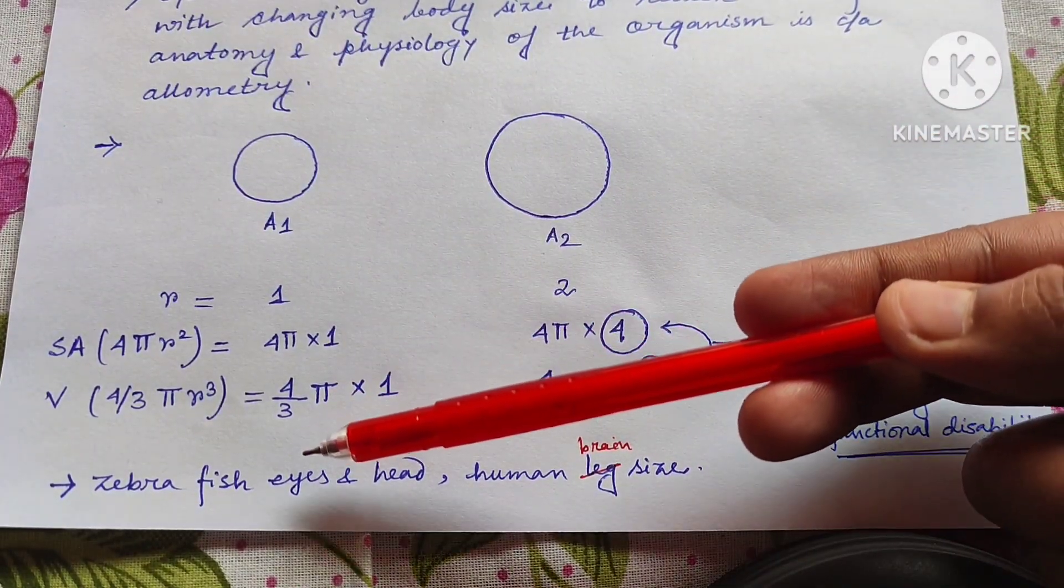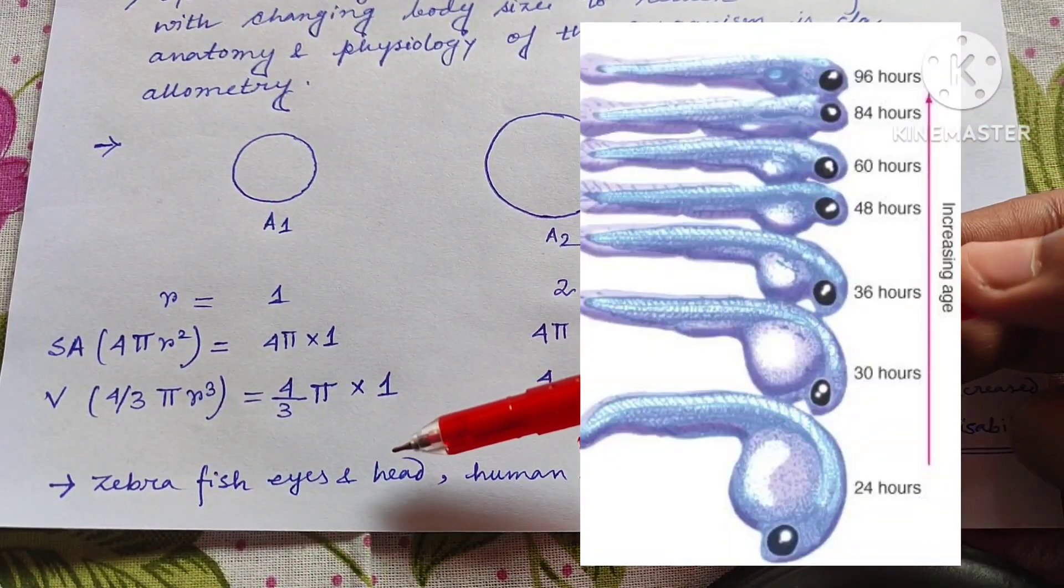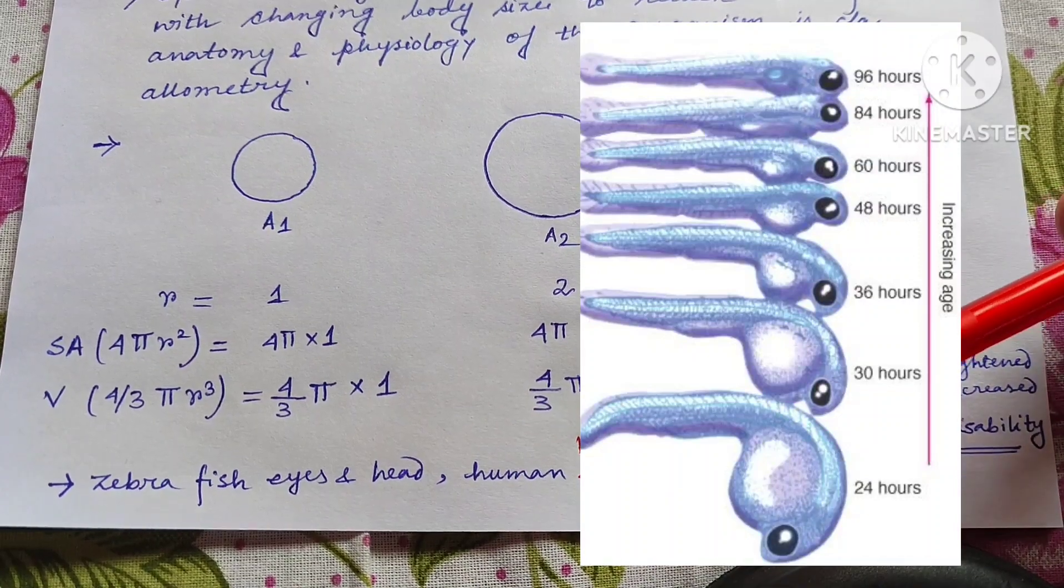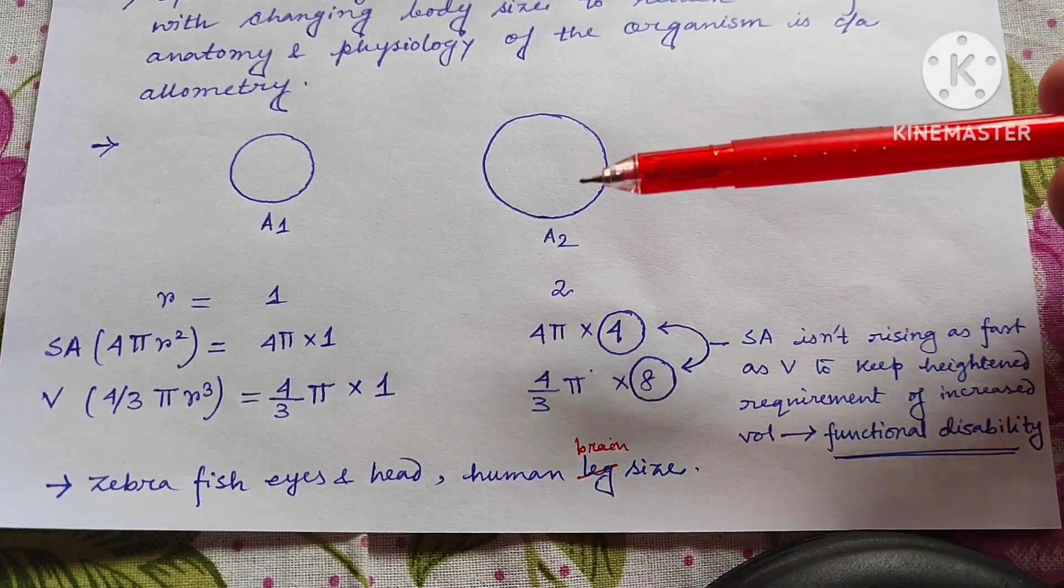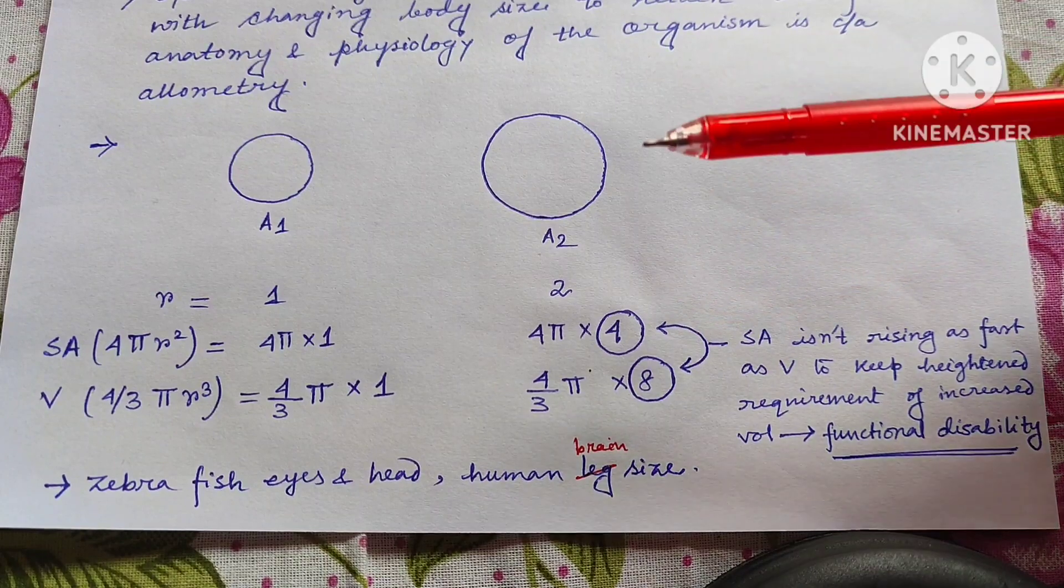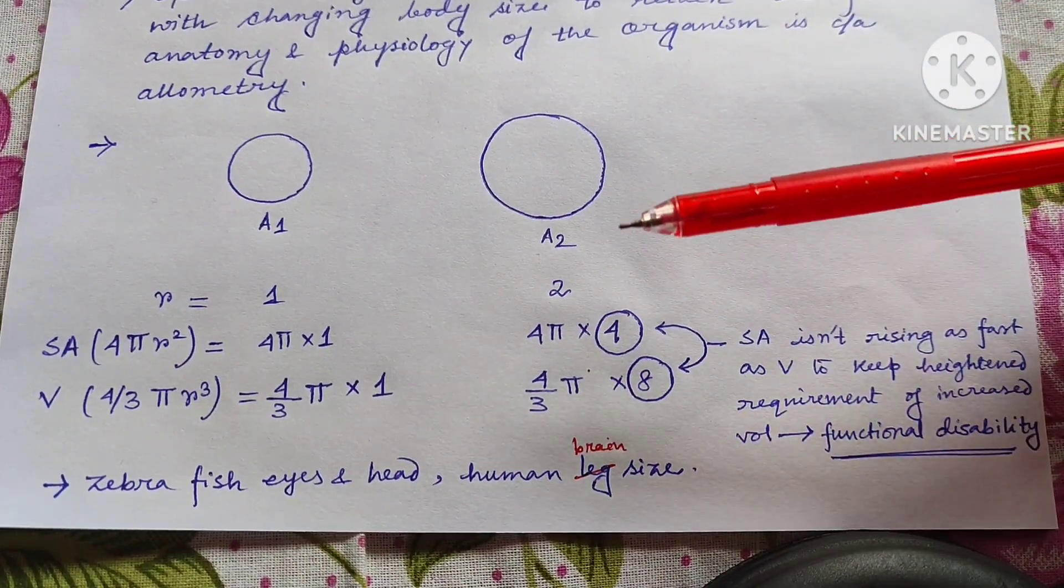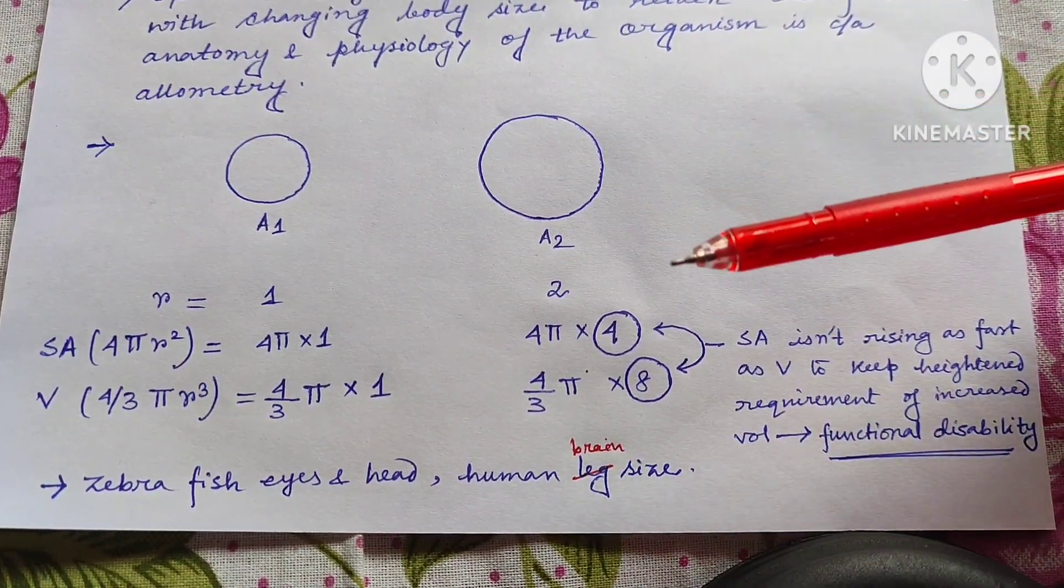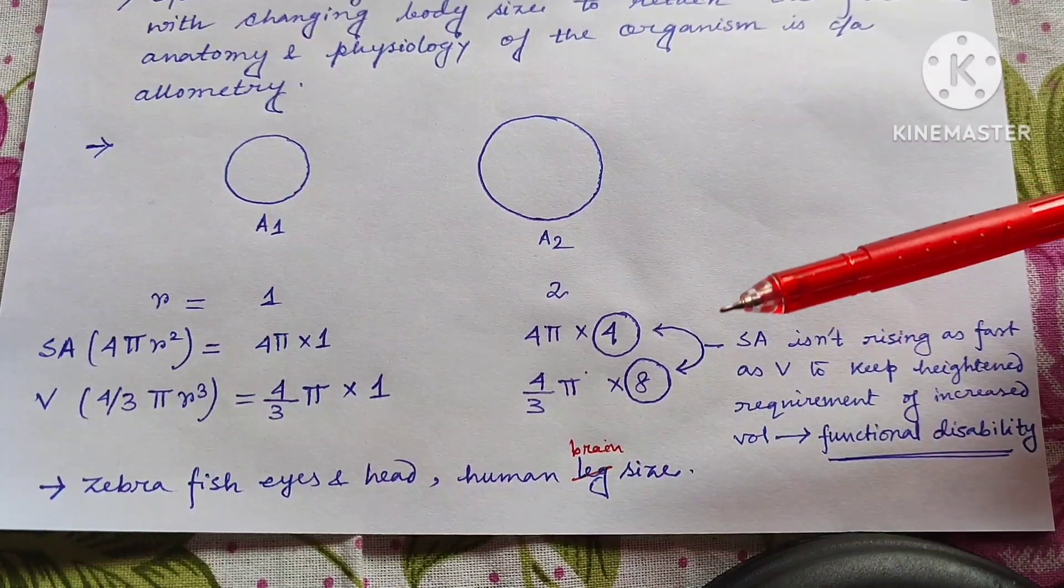Similarly, the similar condition can be seen in zebrafish eye and head length. So allometric scaling helps us to maintain our functional ability in real environment. So this is all about today's video.